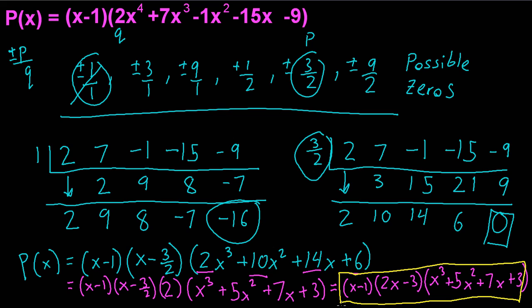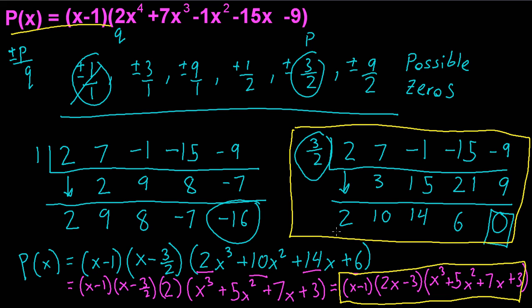Looking back at the synthetic division for x = 3/2, all the resulting values were positive. By the upper bound theorem, this means 3/2 is an upper bound for all roots. Since Descartes' rule told us there are two or zero positive roots and we've found two (x = 1 and x = 3/2), all remaining roots must be negative.